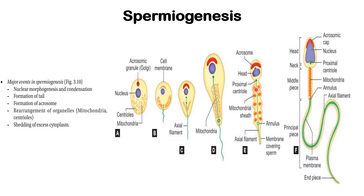We only need the acrosomal cap, the nucleus, the proximal centriole, the midpiece, and the tail for movement. With this morphological structure attained, the sperm cell is now mature, and spermiogenesis ends there.